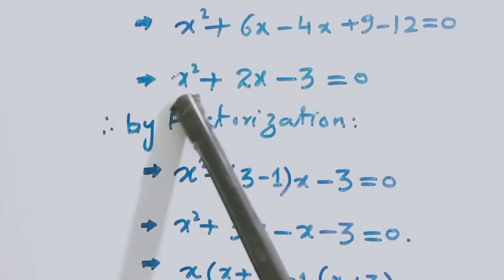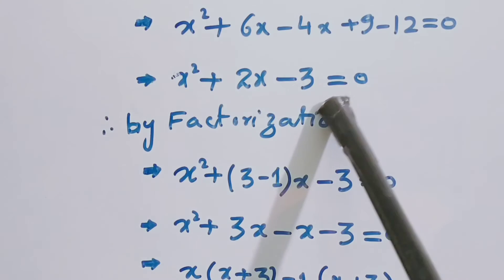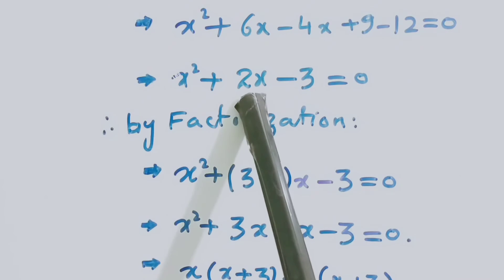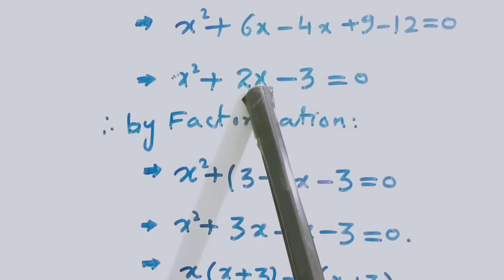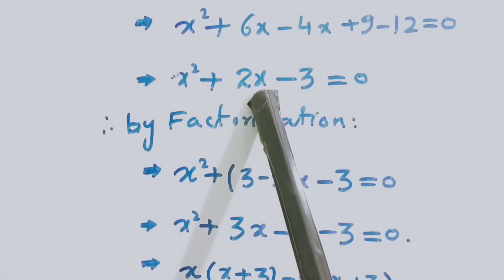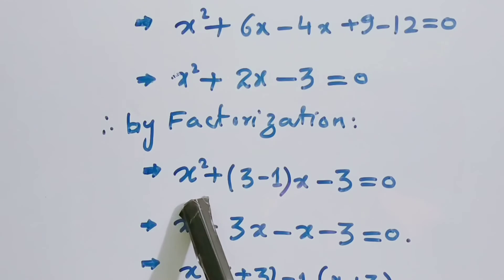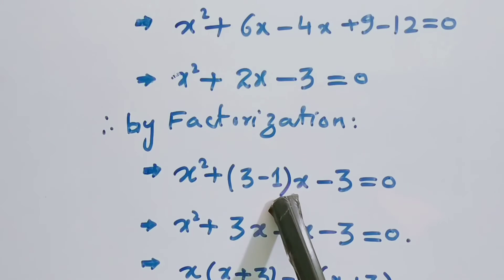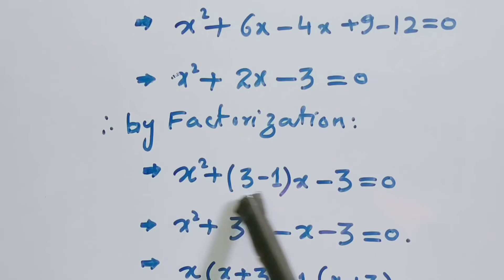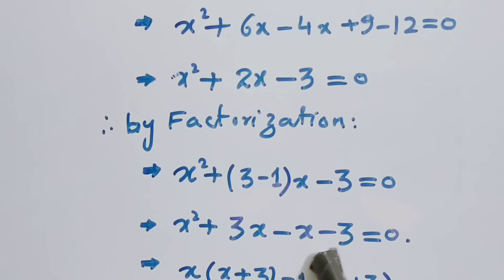The coefficient of x² is 1 and the constant term is −3. Multiplying 1 by −3 gives −3. We need two numbers whose product is −3 and whose sum is +2 (the middle term coefficient). Those numbers are +3 and −1, since 3 × (−1) = −3 and 3 + (−1) = 2. So we write: x² + 3x − x − 3 = 0.